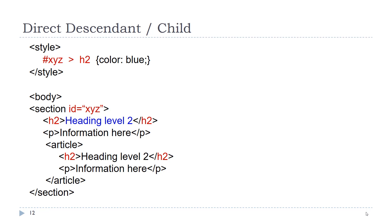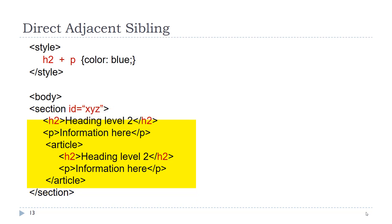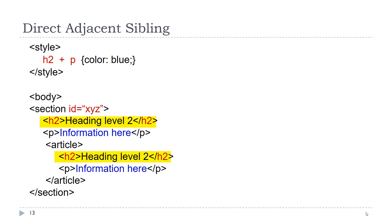We also have the ability to select an adjacent sibling. Siblings are elements that are all on the same level. Here we have the same code: we have our section, and in the section we have an H2, a P, and an article. That H2, P, and article are all children of the section — therefore, they are also siblings. Inside the article tag there are two children, and therefore they would be siblings as well. So if we look at our code, 'H2 + P' means that we want to apply the style to the P element that is a direct sibling of H2 — meaning it comes directly after.